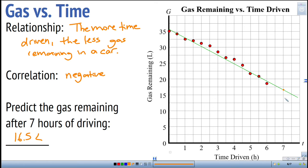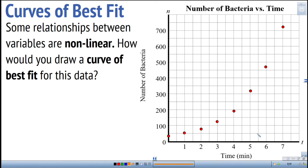Sometimes the data doesn't fit a straight line but fits a curve of best fit. When there's a nonlinear relationship, draw a smooth curve of best fit through the data. If it's clearly a curve, draw a curve; if it's clearly a straight line, draw a line. You can make predictions using a curve of best fit just like with a line of best fit. That's how we use lines and curves of best fit on scatter plots to understand the relationship between two variables.